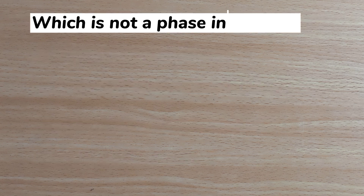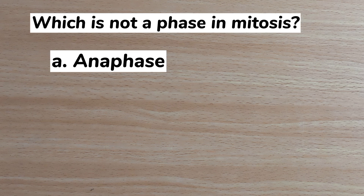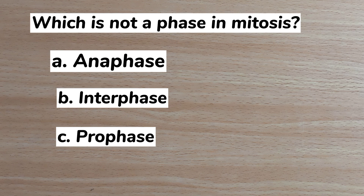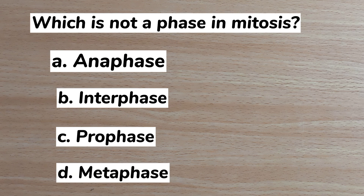Number 3. Which is not a phase in mitosis? A anaphase, B interphase, C prophase, D metaphase. Answer: B interphase.